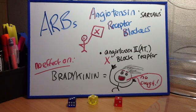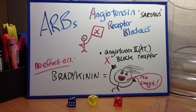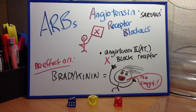Now let's look at the ARBs, angiotensin receptor blockers, the sartans. Similar drugs — ARBs include losartan, valsartan, and the other sartans. I'm looking at the Lange pharmacology cards.